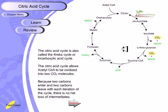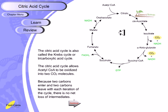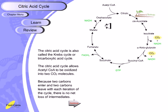The citric acid cycle is also called the Krebs cycle. It allows acetyl-CoA — the basic substrate or ingredient — to be oxidized into two carbon dioxide molecules, and it also generates water. There is no net loss of intermediates because two carbons enter from acetyl-CoA and two carbons are released as CO2 during the TCA cycle.